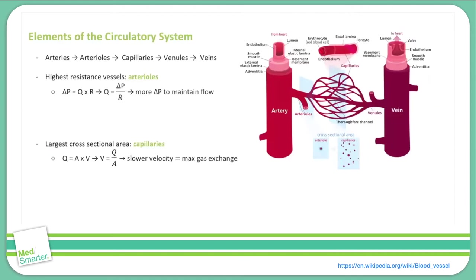When blood leaves the heart it travels through the aorta, which is part of the arterial system. From there it travels through various elements of the arterial system into the arteriolar system. From there it enters the capillaries where it participates in gas exchange. Then it travels through the venules and then the veins.